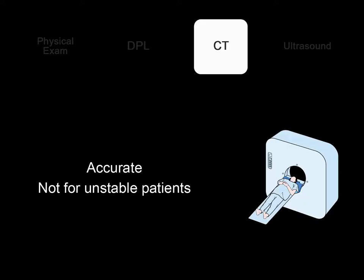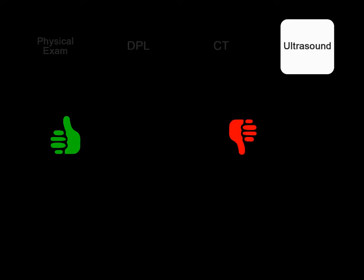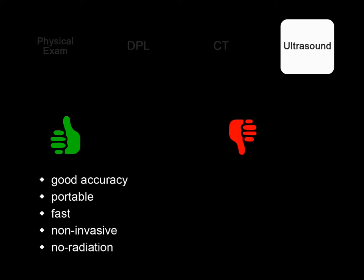CT scan is a very accurate tool to detect many injuries, but the biggest disadvantage is the need to transfer the patient outside the emergency department and the time needed to perform the study. Unstable patients shouldn't lie on the CT table. Ultrasound has many advantages, but also some limitations. It is accurate in detecting free fluid. It is a portable diagnostic tool, can be done very quickly, and it is non-invasive. Unlike CT, it has no radiation.